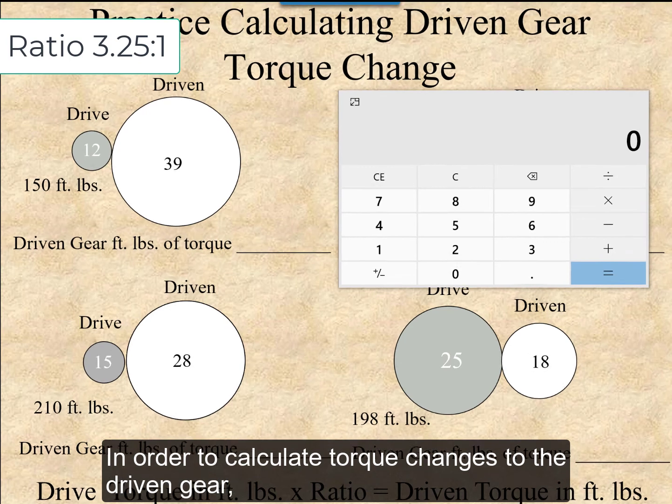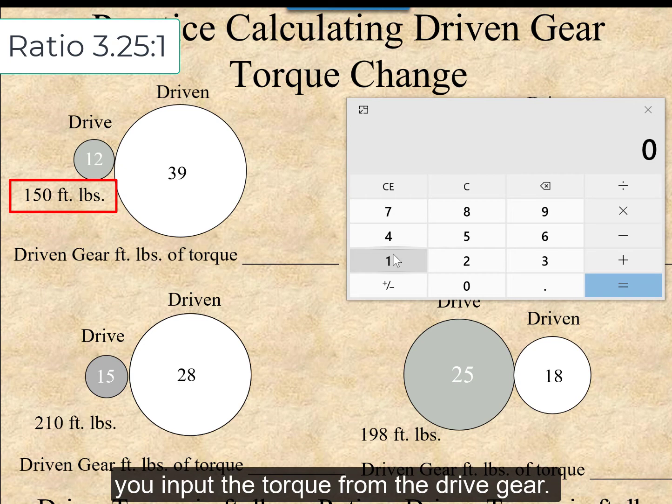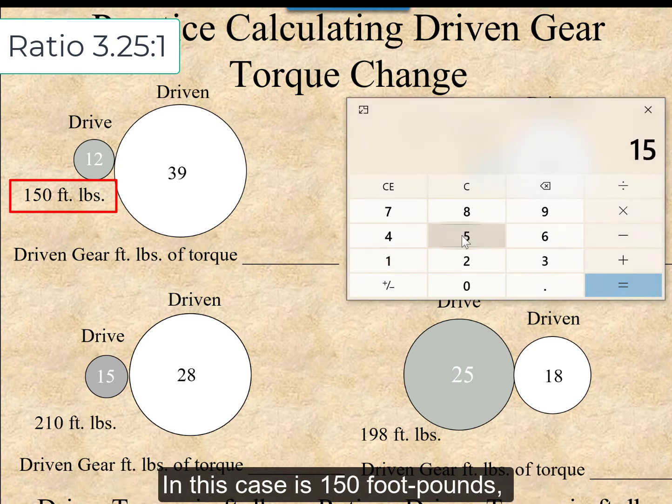In order to calculate torque changes to the driven gear, you input the torque from the drive gear. In this case, it's 150 foot-pounds.